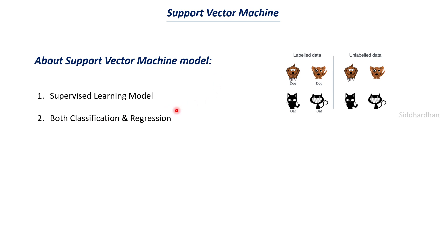SVM is mainly used for binary classification problems and not multi-class classification. Binary classification means we classify data points into two classes — for example, predicting whether a mail is spam or not, or whether a person will get a job or not. Multi-class classification is where we have multiple classes, such as identifying which of 10 different colors an image belongs to. Support vector machine is predominantly used for binary classification; using it for multi-class requires some additional adjustments.